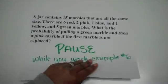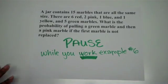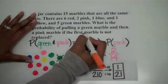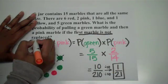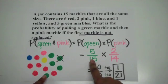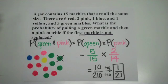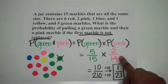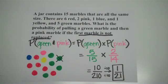Go ahead and pause the video while you work the last example. When you see that the first marble is not replaced, that tells you these are two dependent events. If I get that green marble, that's a 5 out of 15 chance. Now that the green one is gone, there are only 14 marbles left, 2 of those being pink. Multiplying straight across: 10 over 210, which simplifies to 1 over 21. So you have a 1 out of 21 chance of getting a green and a pink marble.